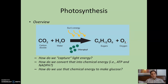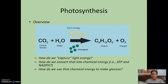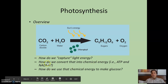There are three questions we are going to address with regard to photosynthesis. One, how do we capture the light energy in the first place? Two, how do we convert that light energy into chemical energy — specifically ATP and NADPH? NADPH is an electron carrier, just like NADH and FADH2, those intermediate energy carriers — think P for photosynthesis. And three, how do we use that chemical energy to make glucose?